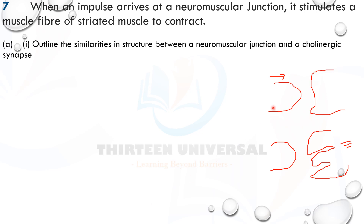Both structures have a pre-synaptic membrane — the membrane of the neuron before the synaptic cleft. Both have a pre-synaptic neuron with a pre-synaptic membrane. The pre-synaptic membrane contains calcium ion channels, which allow calcium ions to move in. Each of them also has many mitochondria in the pre-synaptic neuron, providing energy for formation of ACh, vesicles, and exocytosis.